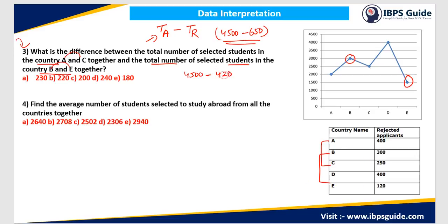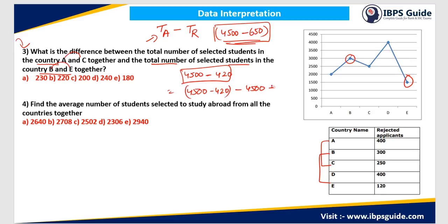Since both groups have 4500 applied, the 4500 cancels out and I am left with 650 minus 420. That equals 230. So the answer is 230.